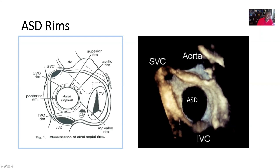The aortic and superior rim together are called the retro-aortic rim. Usually when you have an IVC and posterior rim deficiency, these are the more technically challenging ASDs to fix — it can be really, really tricky.